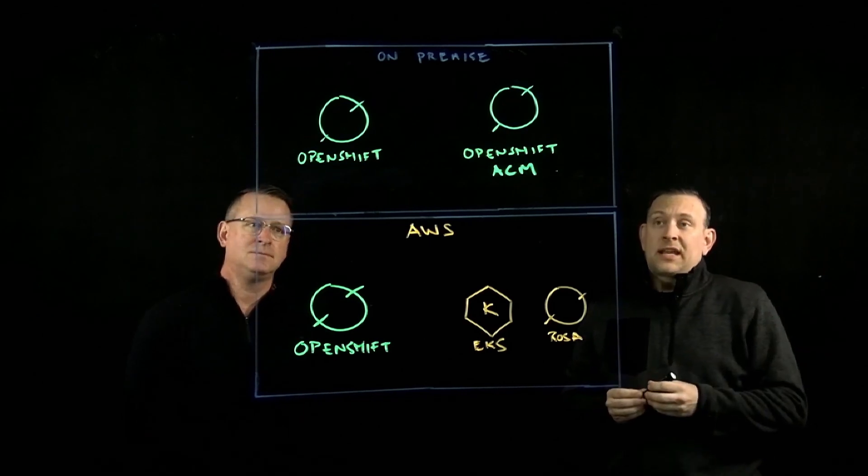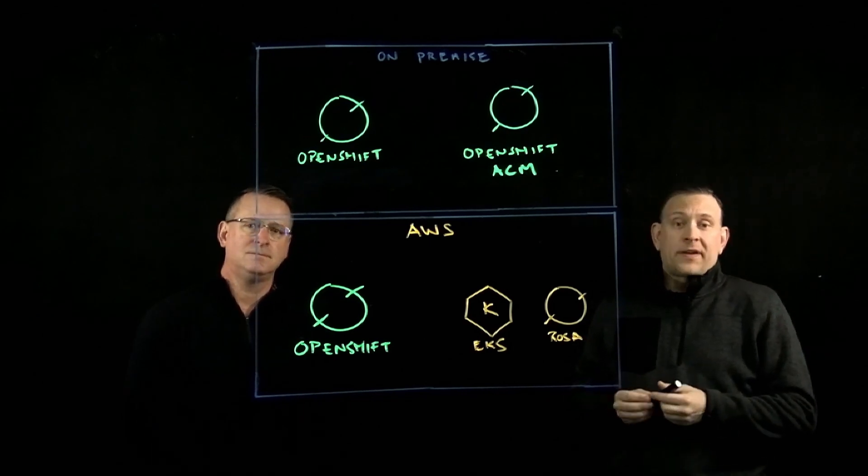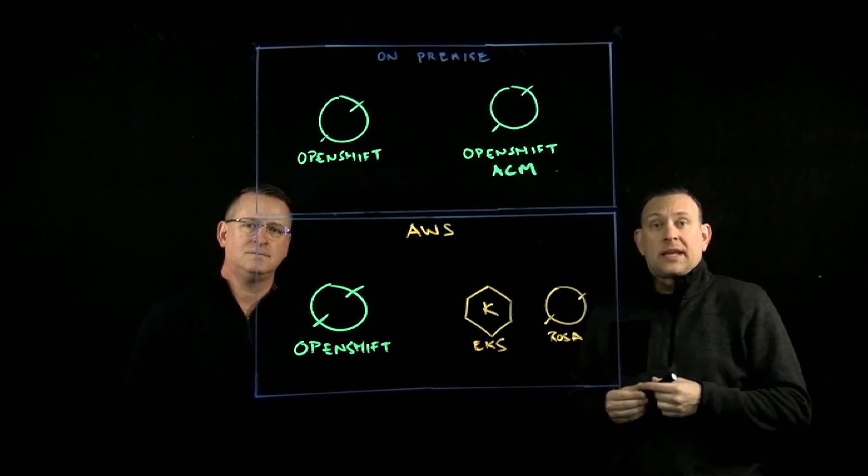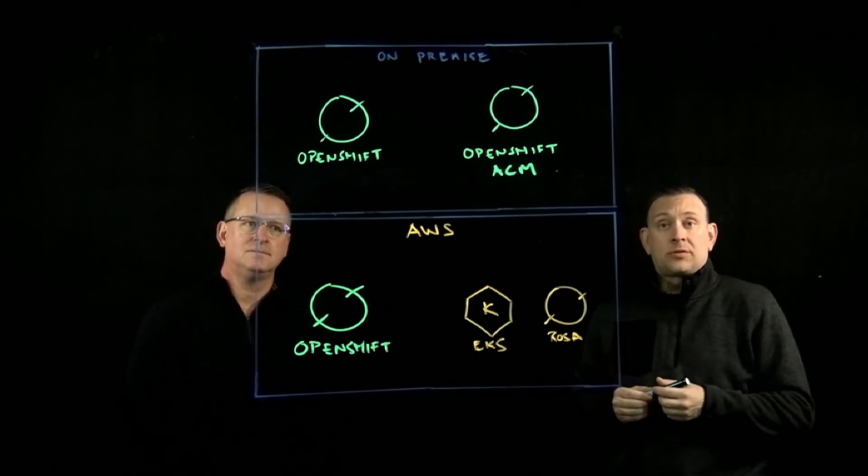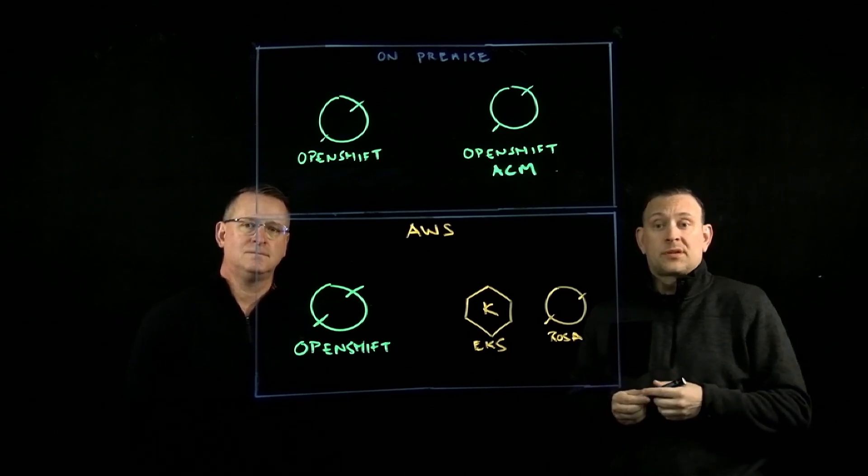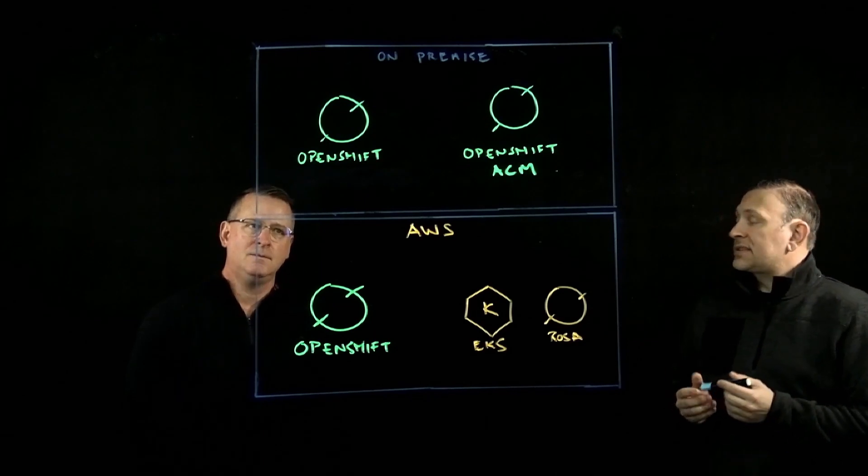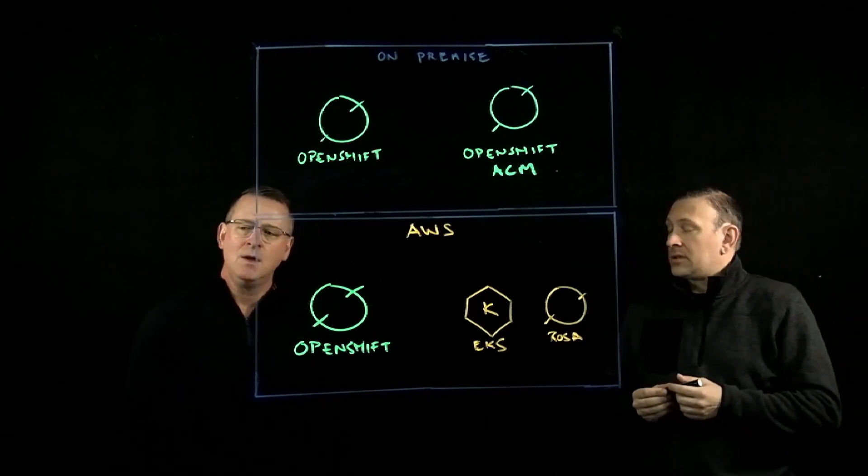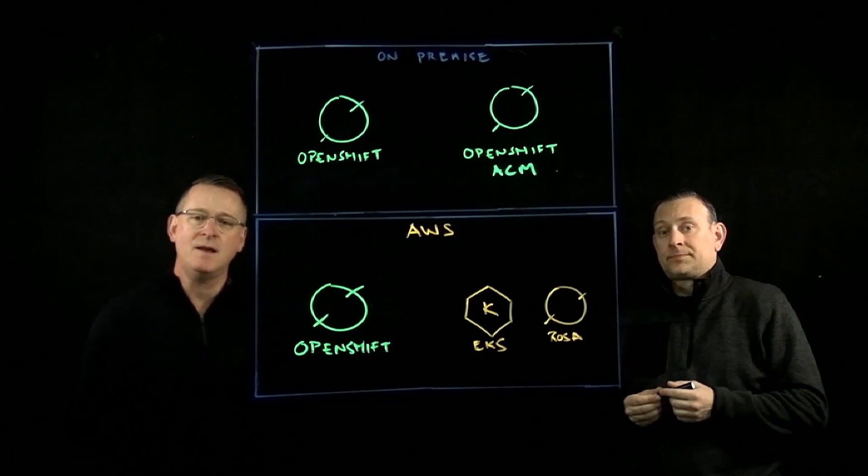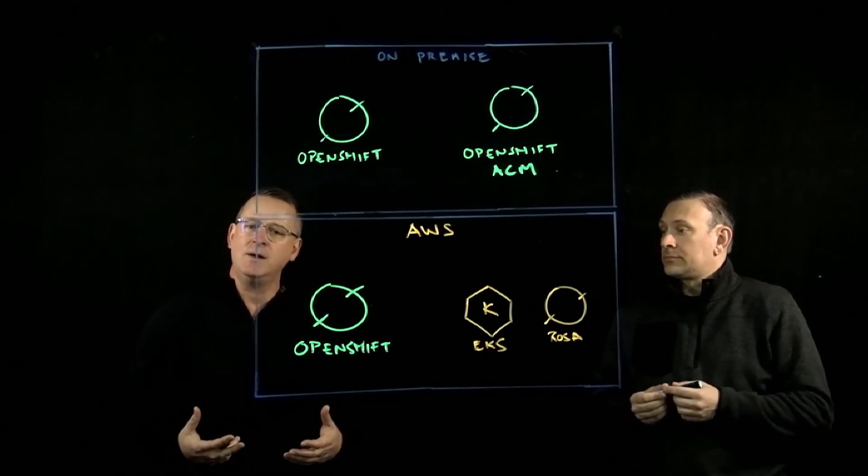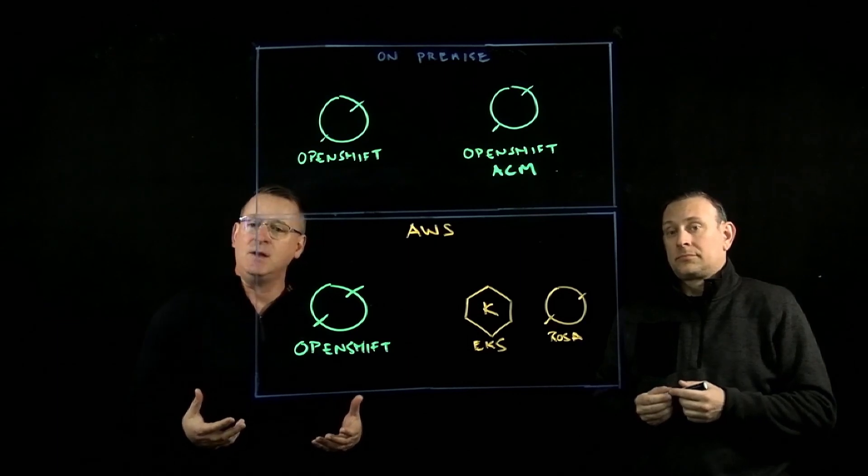So we're going to talk a little bit today about OpenShift ACM, or Advanced Cluster Manager, and all the benefits and features that it can bring to managing not just OpenShift but also other Kubernetes platforms. Jim, do you want to give a high-level overview of what ACM is and the value that it brings? Sure. ACM stands for Advanced Cluster Manager, and as its name implies, it's used to manage various clusters that we have, specifically Kubernetes clusters.